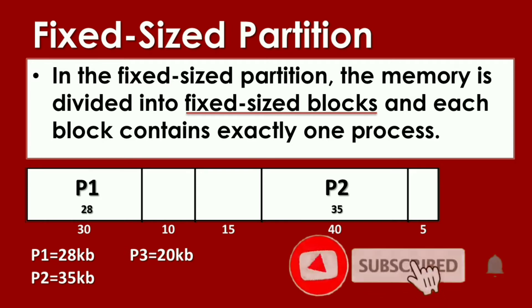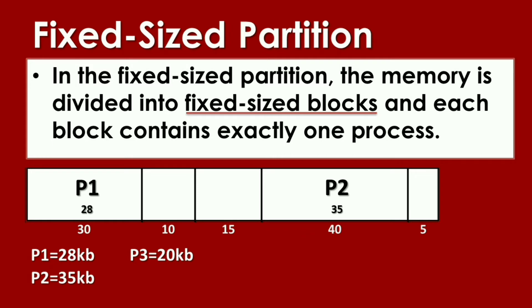Next, we have Process 3. It will check where it can fit. In the remaining size, we have 10, 15, and 5. It has no space to fit. Because it is fixed size, there's no space for Process 3 which has a size of 20 KB. You might be able to add two adjacent blocks together, but that's not allowed. That is the problem for fixed size partition.